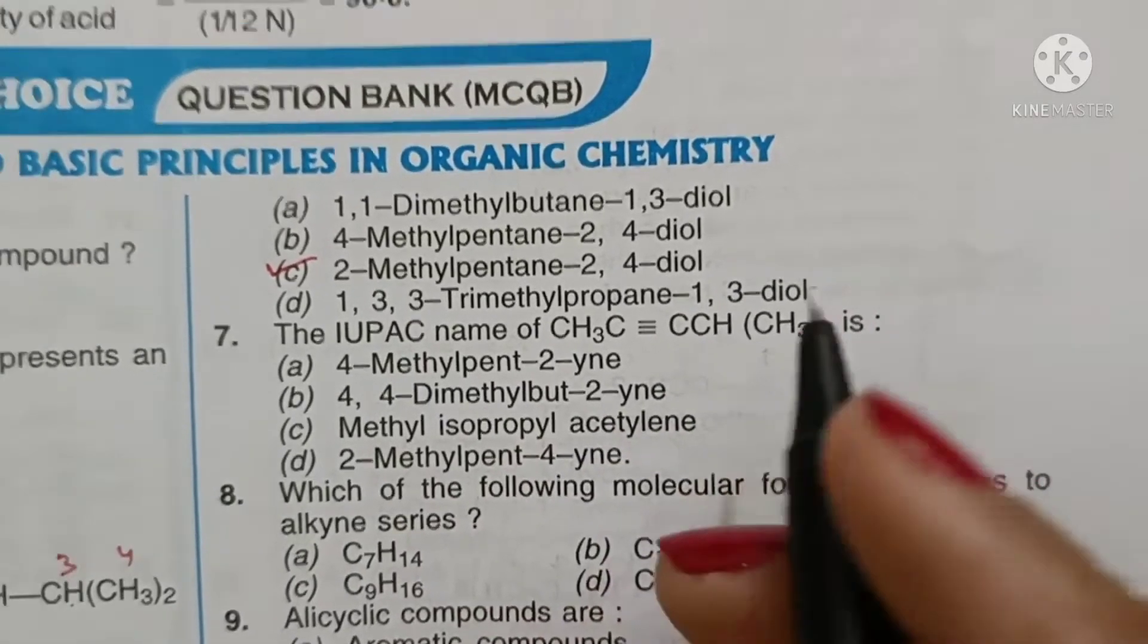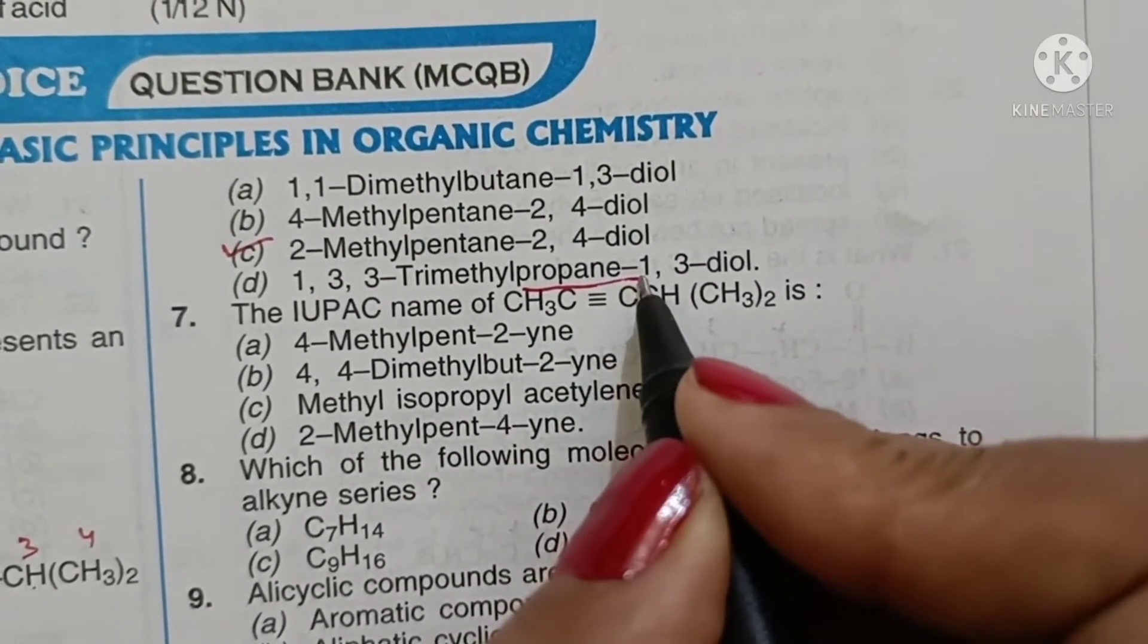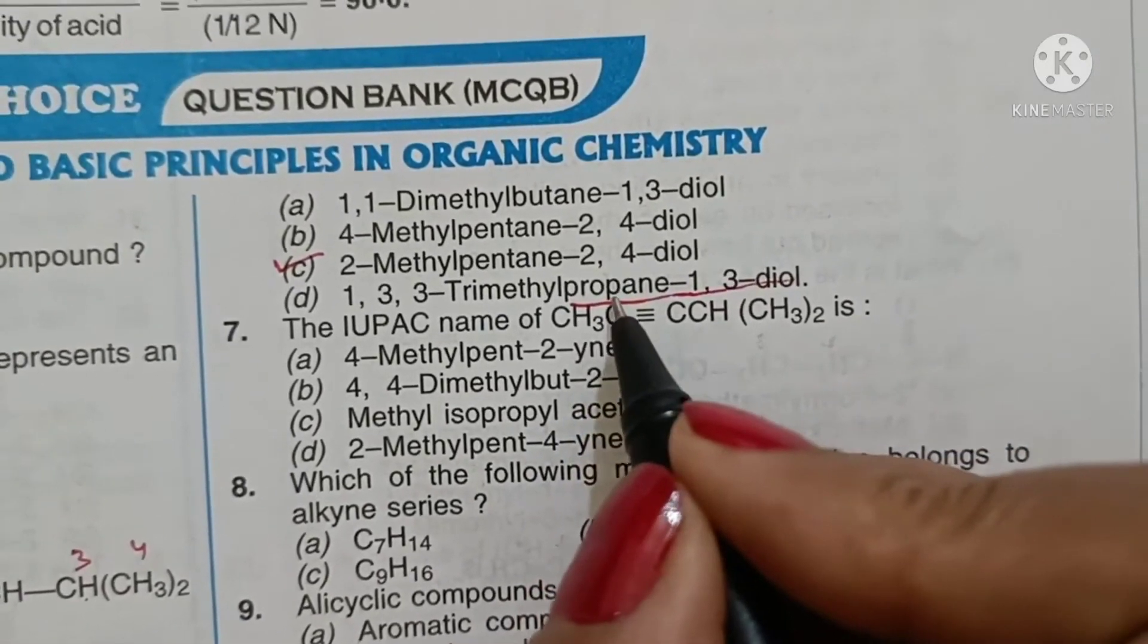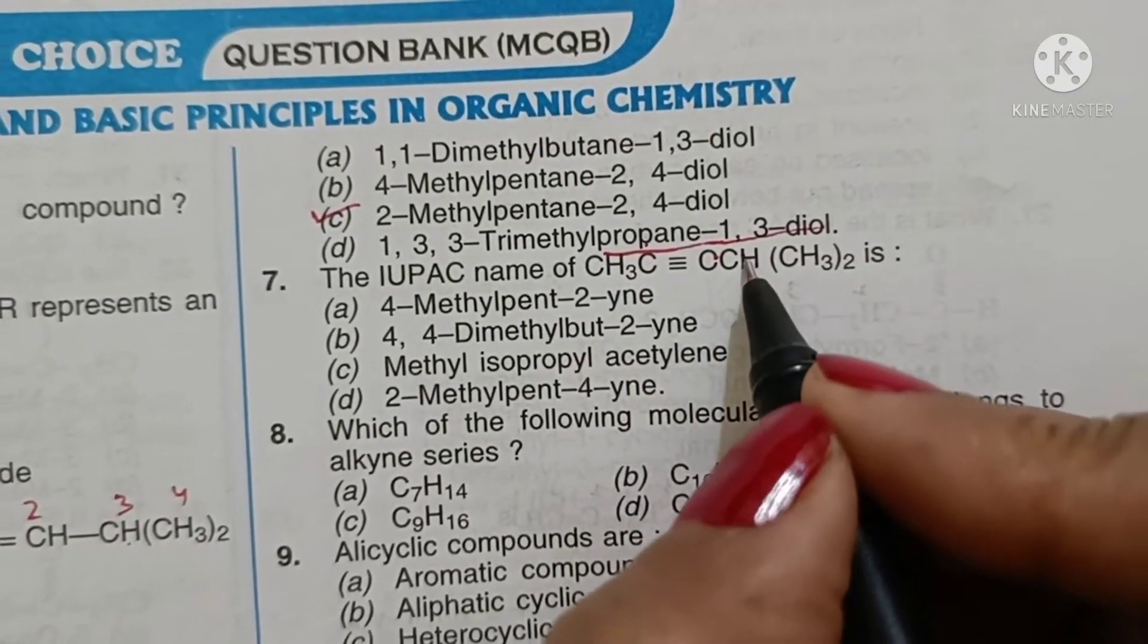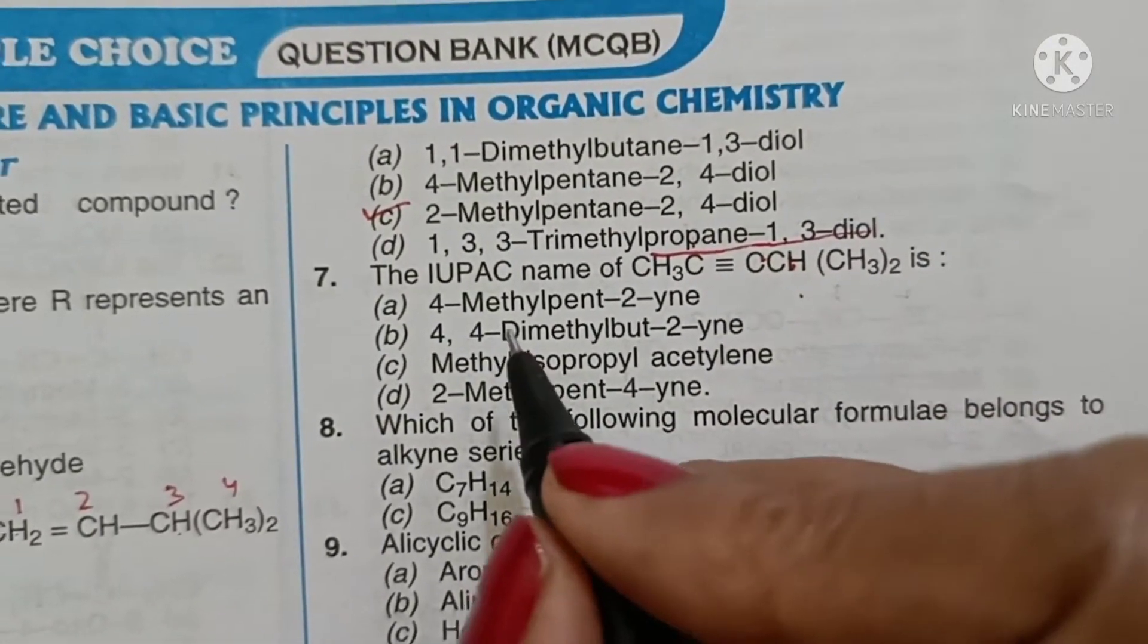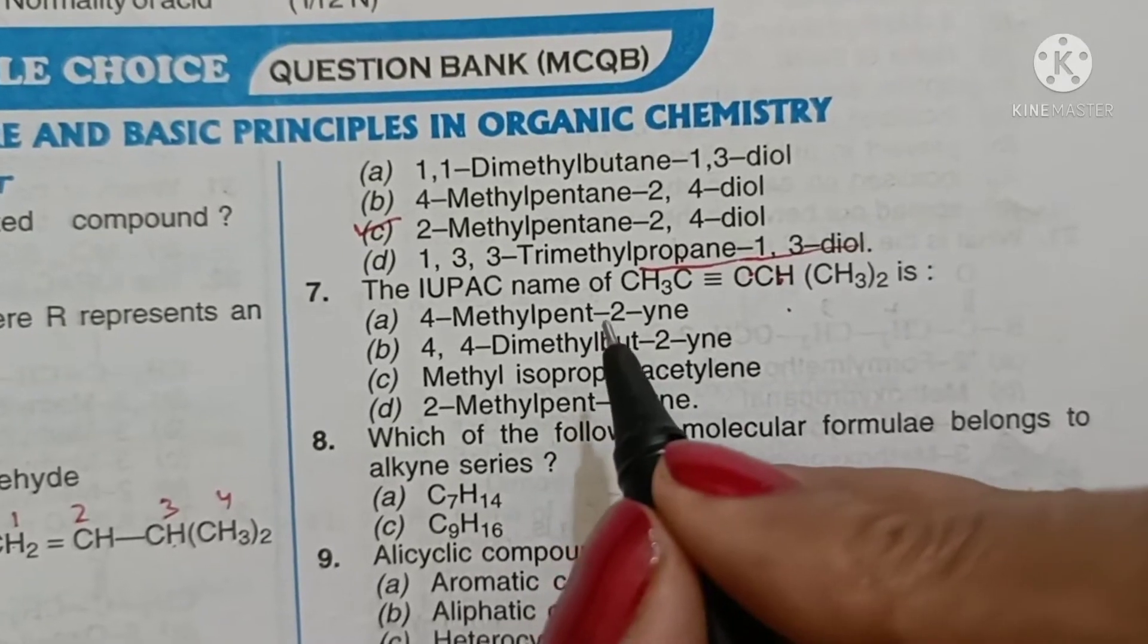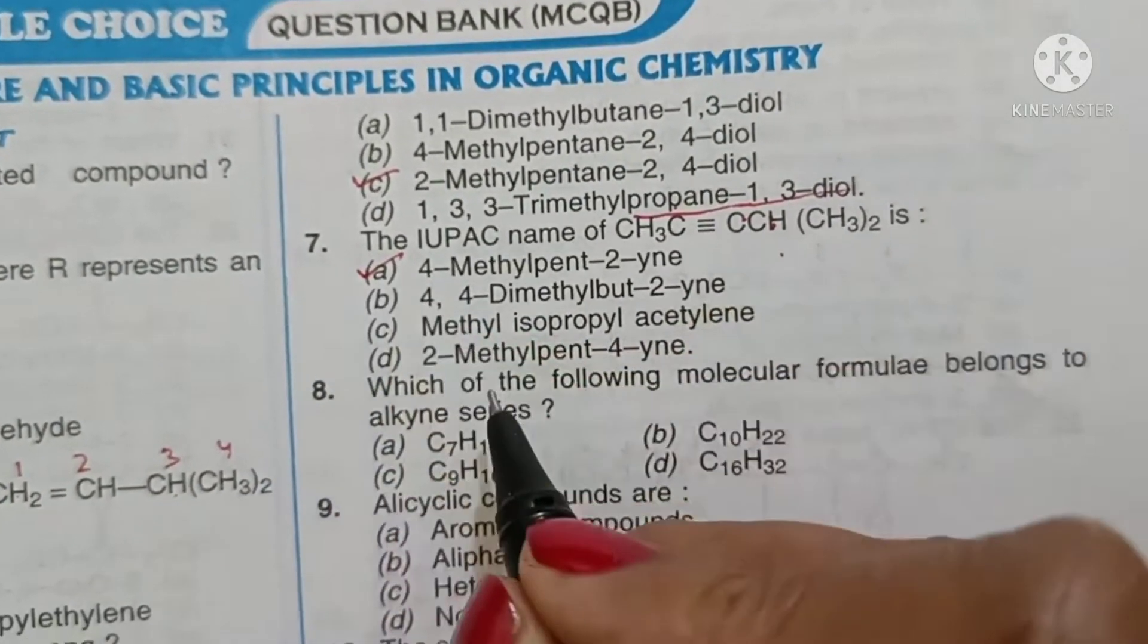IUPAC name of this compound - we number 1, 2, 3, 4, 5, so this is 2, this is 3, this is 4. We have 4-methyl, then pent, then 2-yne. So option A is the correct answer.